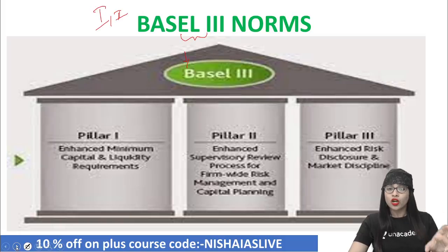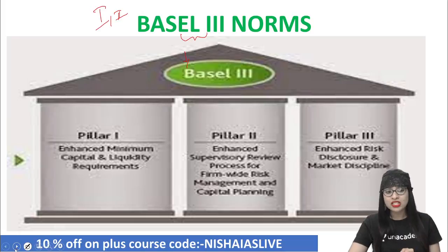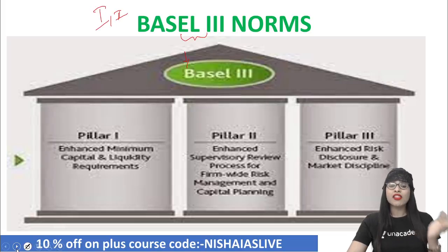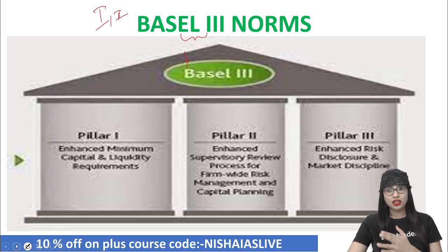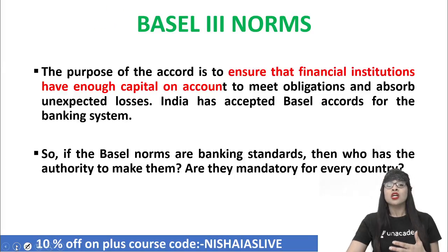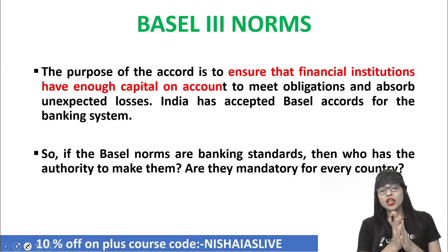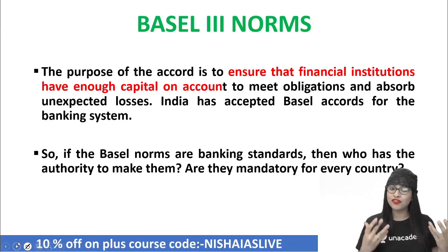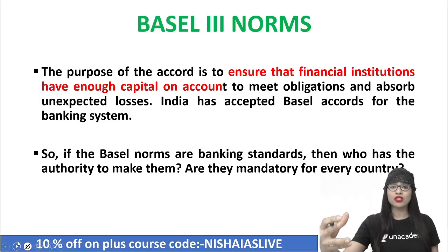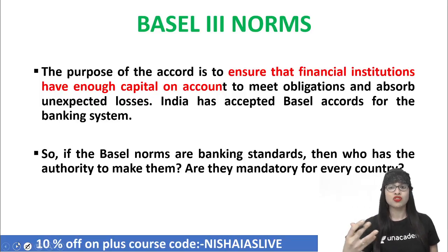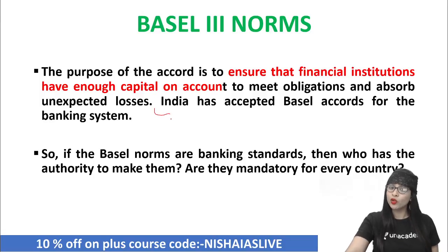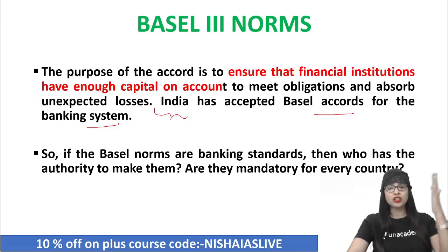This class focuses on what are the rules, regulations and norms with regard to the Basel 3 perspective which the central bank of every country has to follow, so that the commercial banks of that particular country will be able to function properly. Basel Accord or Basel Norm basically wants to ensure that every financial institution of a country has sufficient capital, so they are able to meet all their responsibilities and absorb all unexpected losses or risk. Even for our country India, we do have an accepted Basel Accord for the banking system — Basel Accord 1, 2, and 3.